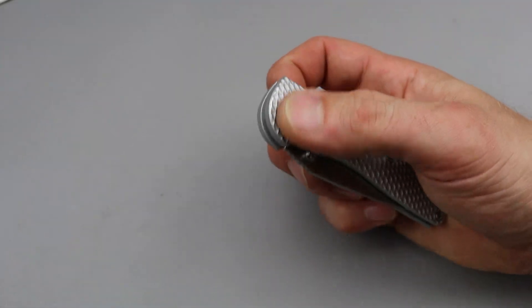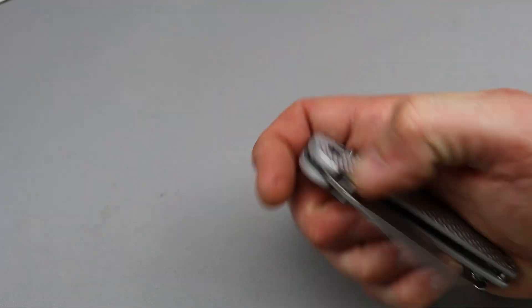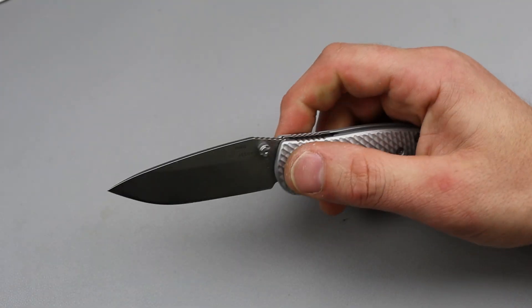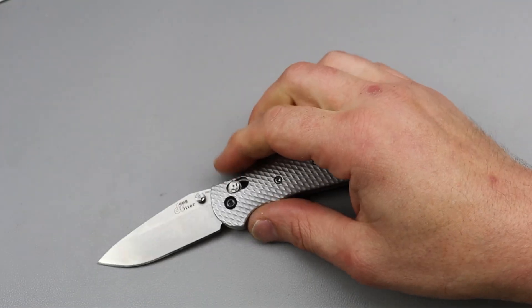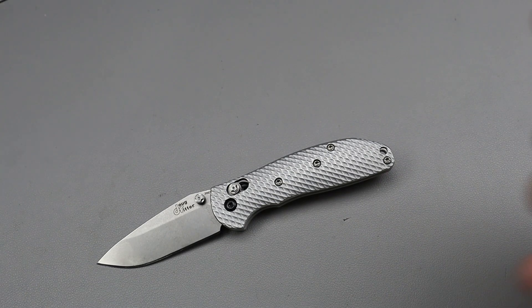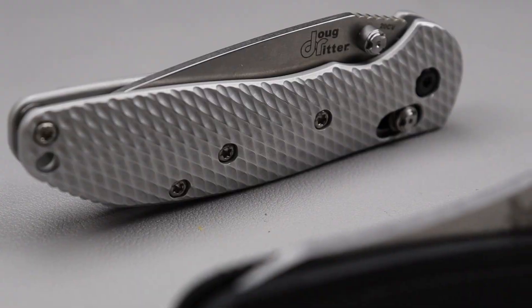Next one the Hogue Ritter RSK Mini. This is a perfect size knife when it comes to a compact knife and actually it's very similar to the Mini Griptilian, the Benchmade Mini Griptilian.